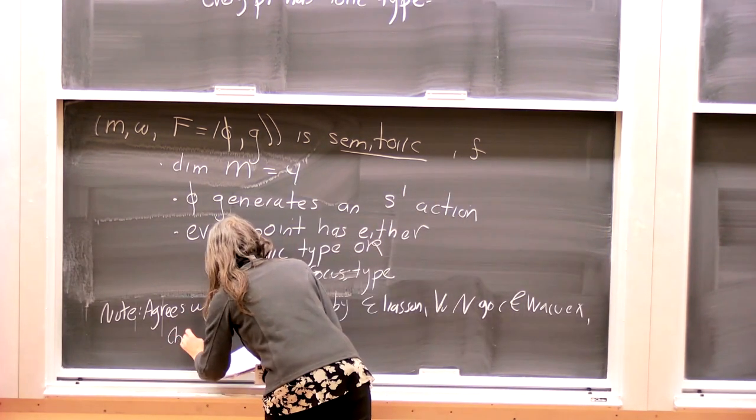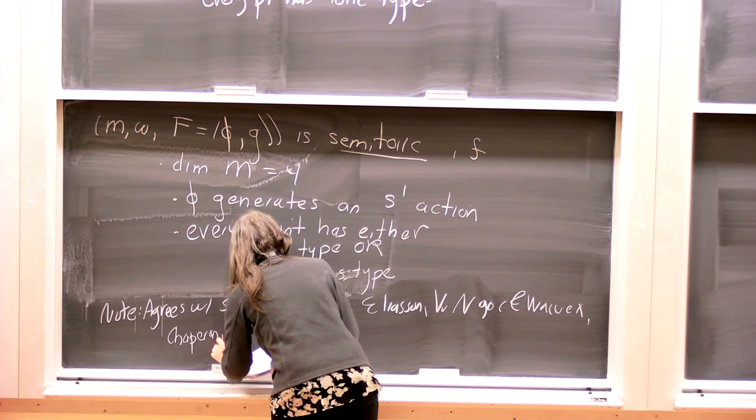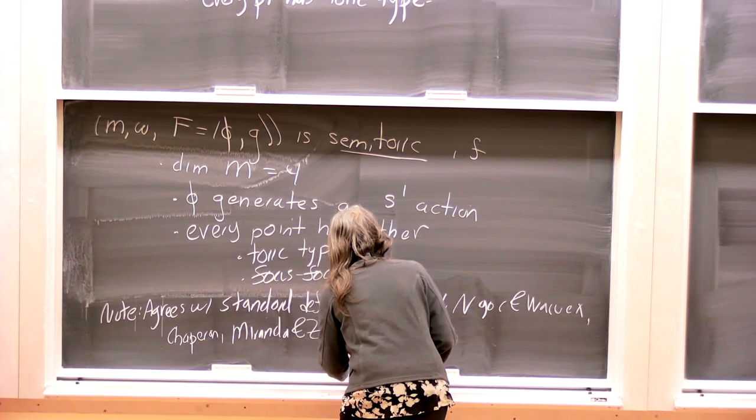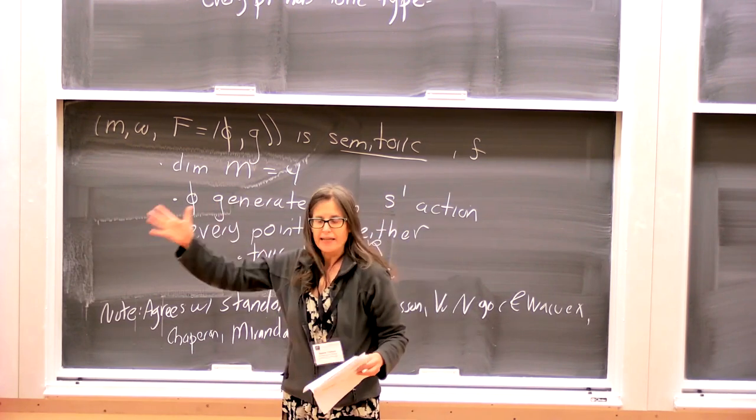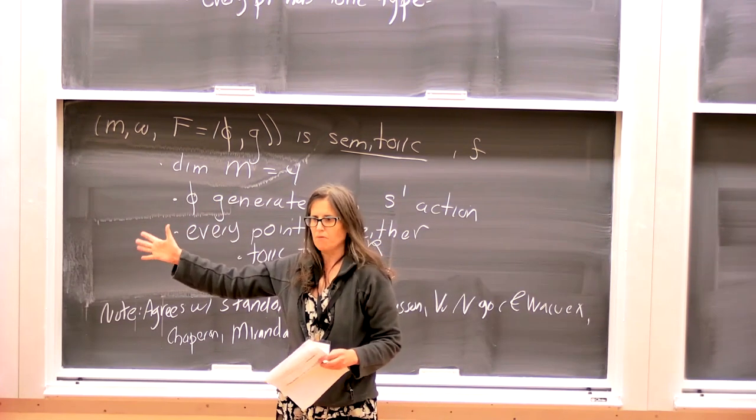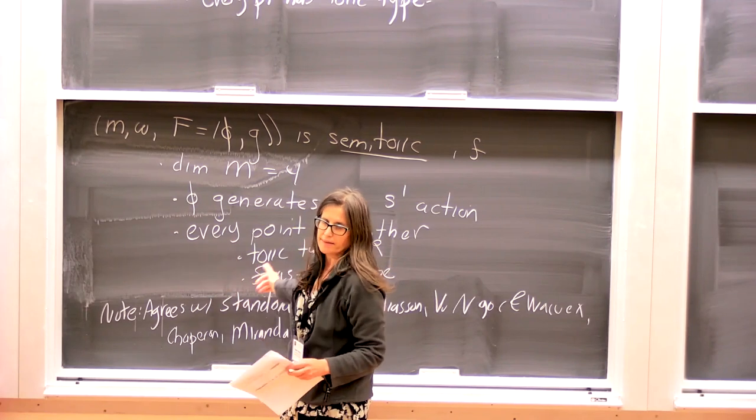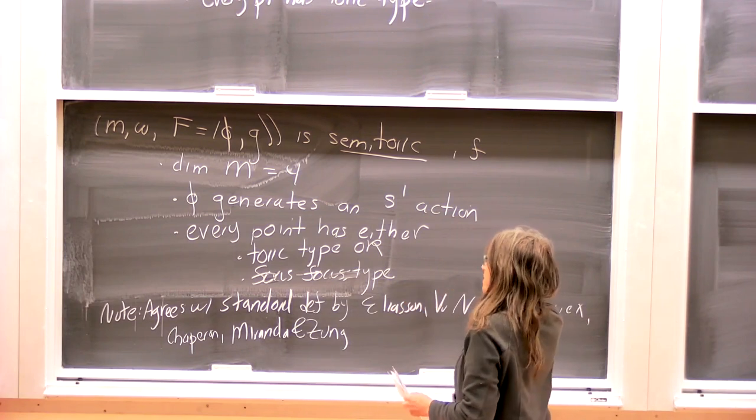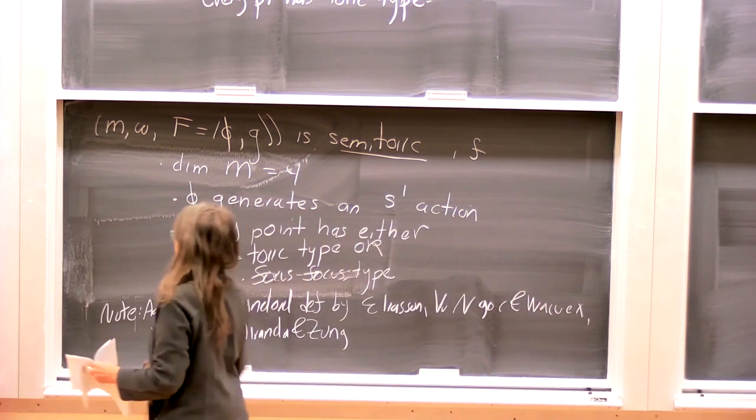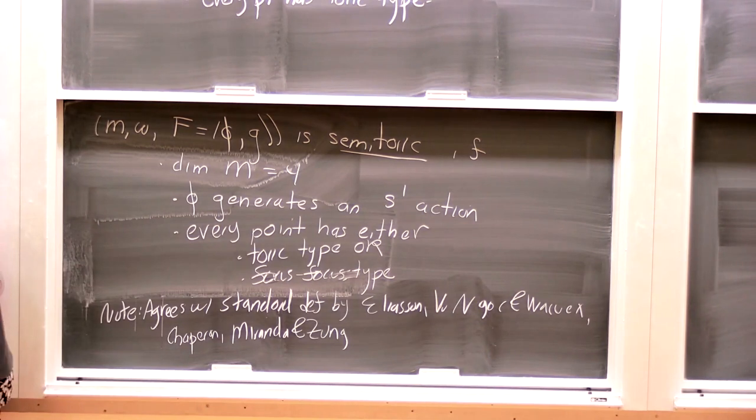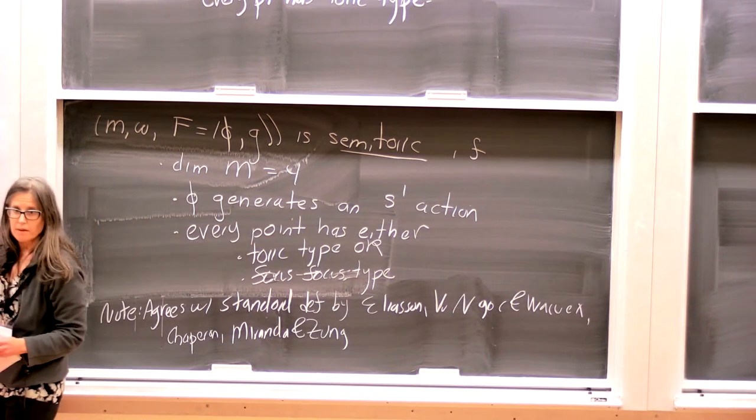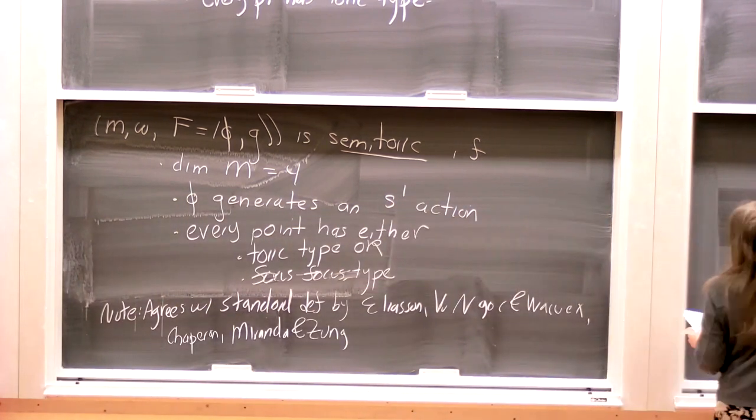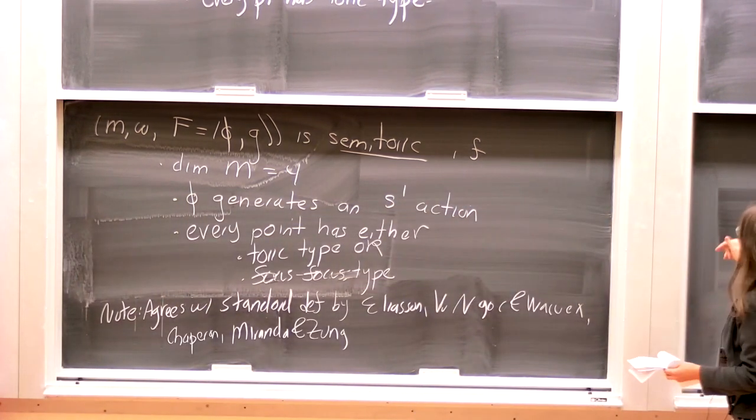So basically it's not usually defined in terms of forcing a local normal form on it, but they've proved the local normal form theorems that you need. So it's usually defined as being a non-degenerate system, which reduces you to these cases without hyperbolic type.